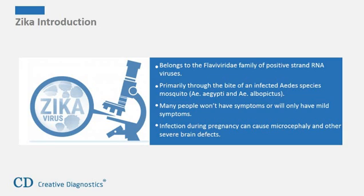Zika virus belongs to the flaviviridae family of positive strand RNA viruses. Zika virus is spread to people primarily through the bite of an infected Aedes species mosquito. Many people infected with Zika virus won't have symptoms or will only have mild symptoms. Zika virus infection during pregnancy can cause microcephaly and other severe brain defects.